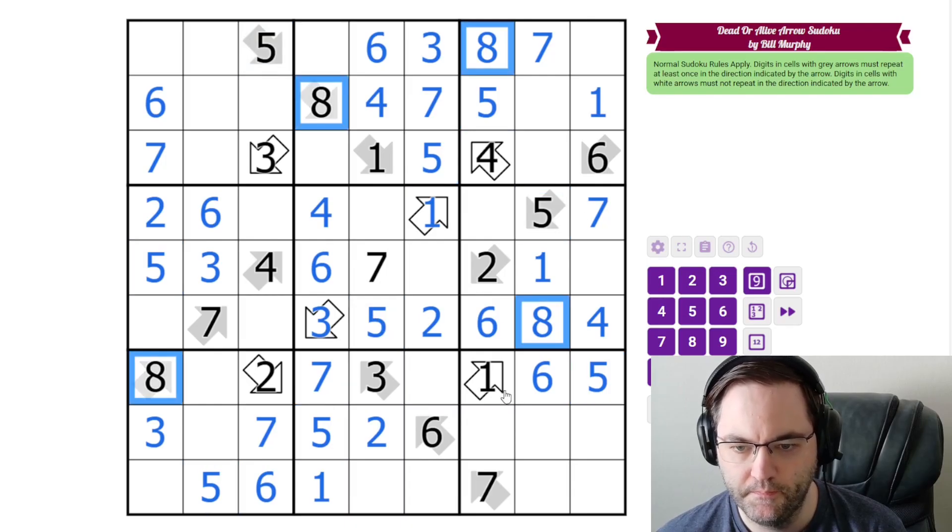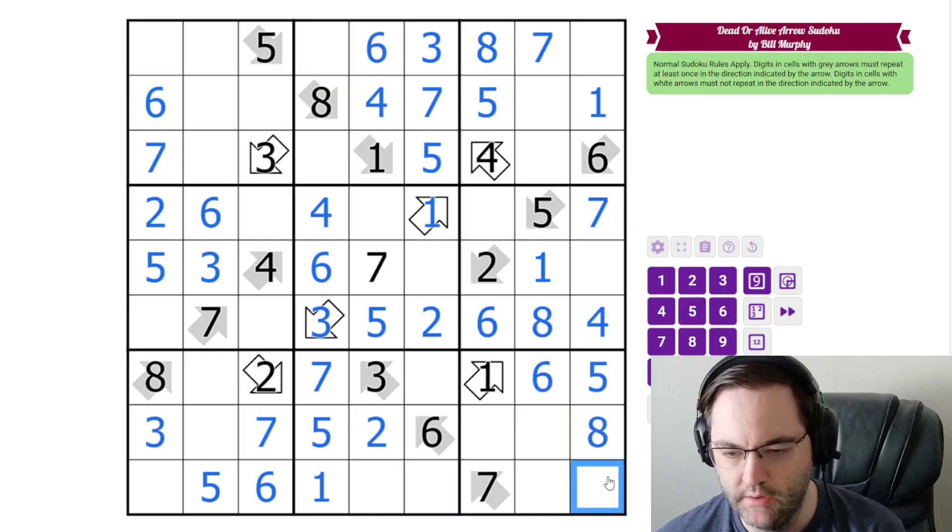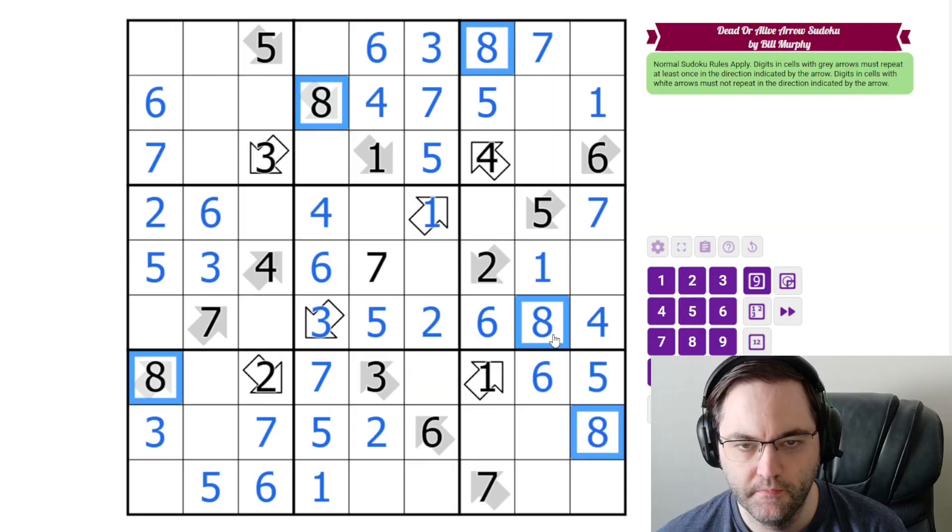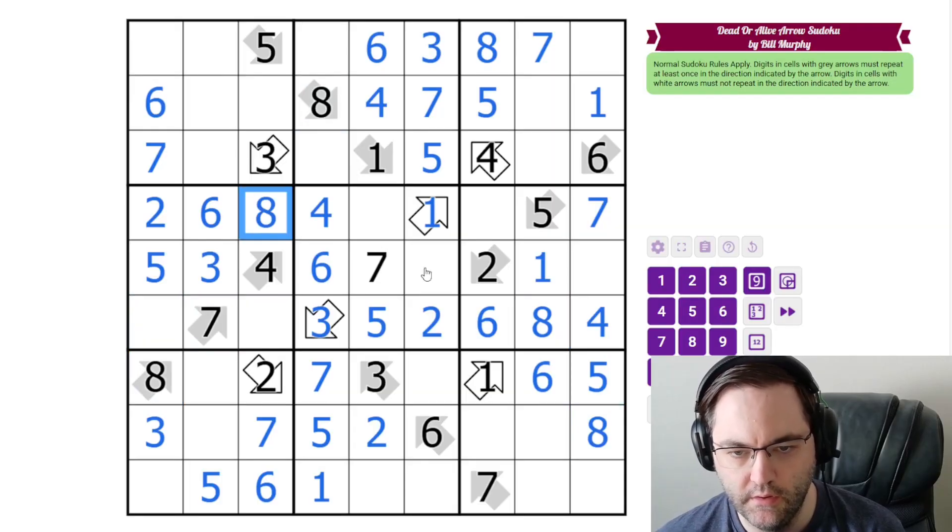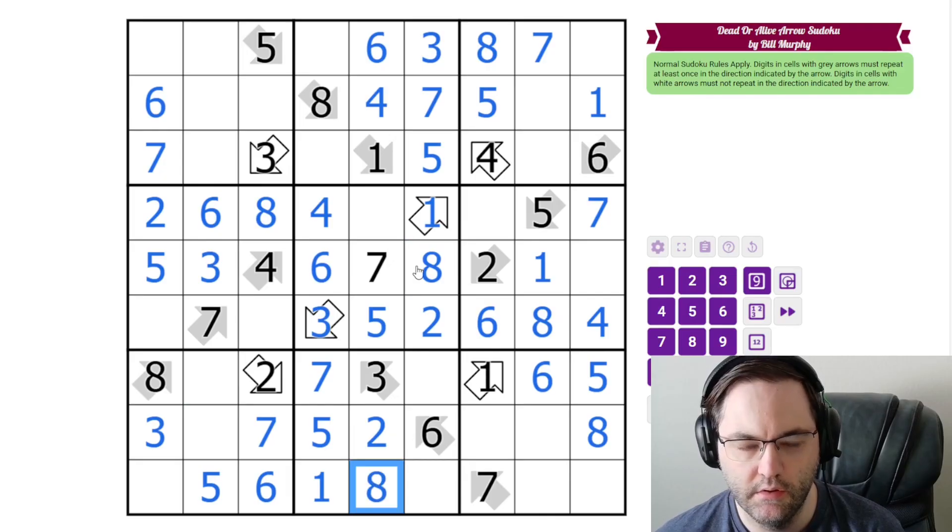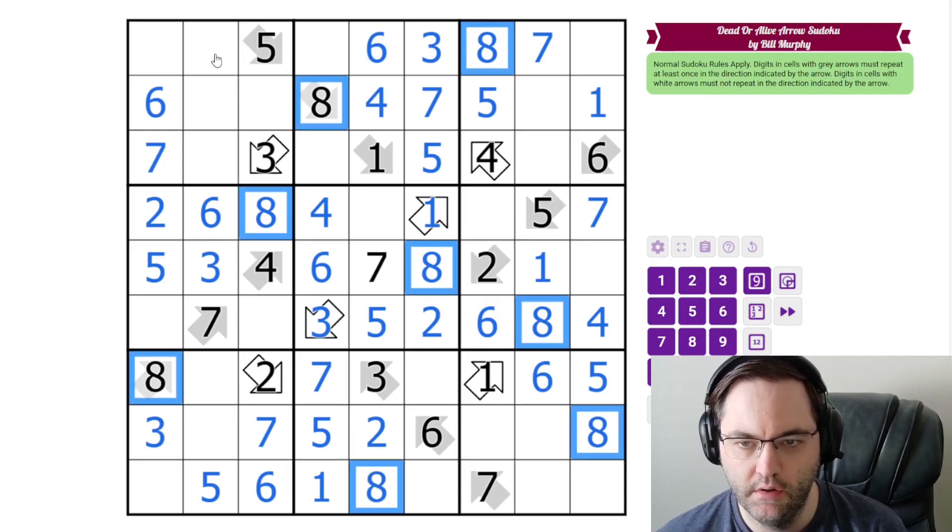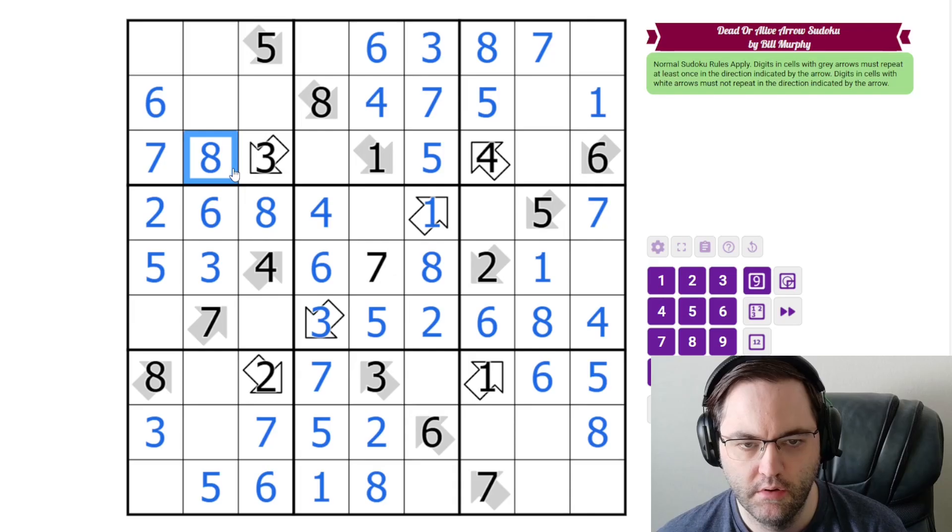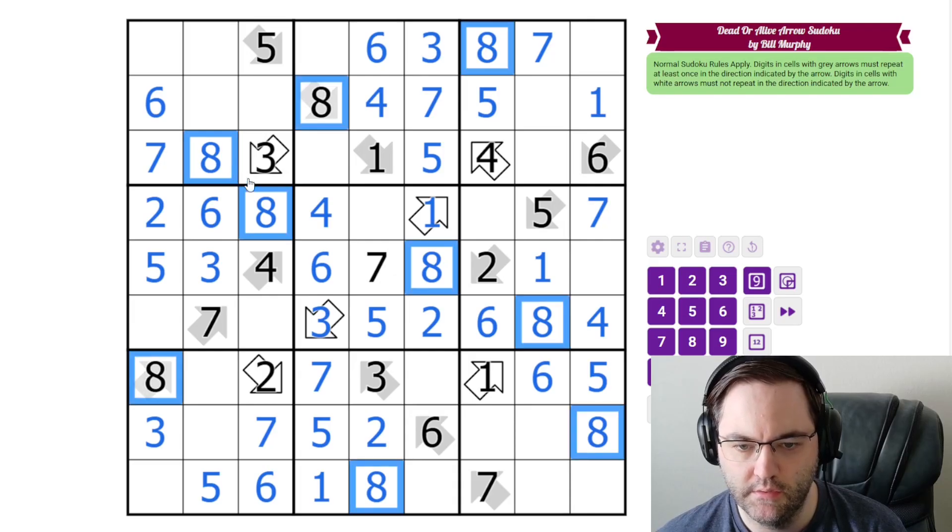8. It's going to go in one of these cells. One of these cells. So 8 goes here. It can't go here. In this box it goes here. And that's going to place it here and here. And up here. Should be all the 8s.